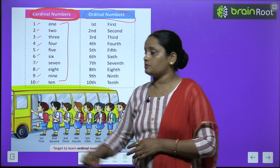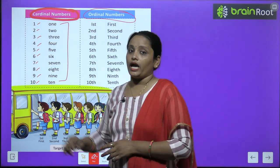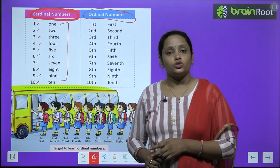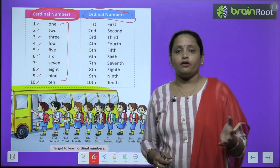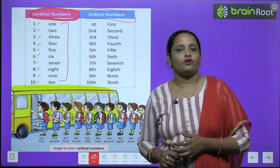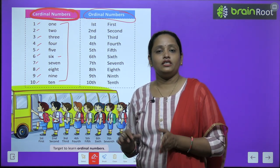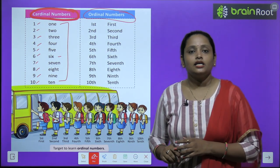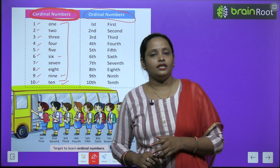Now the spellings of these numbers are also given. ONE: O-N-E, TWO: T-W-O, THREE: T-H-R-E-E, FOUR: F-O-U-R, FIVE: F-I-V-E, SIX: S-I-X, SEVEN: S-E-V-E-N, EIGHT: E-I-G-H-T, NINE: N-I-N-E, TEN: T-E-N.